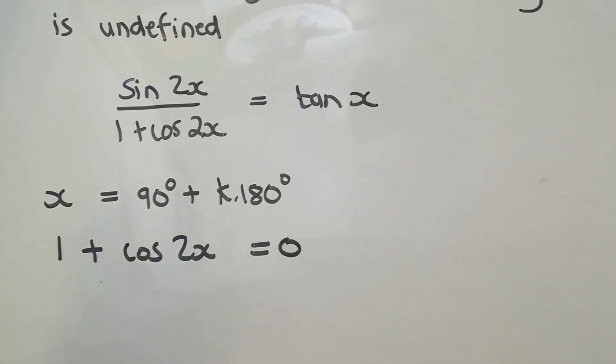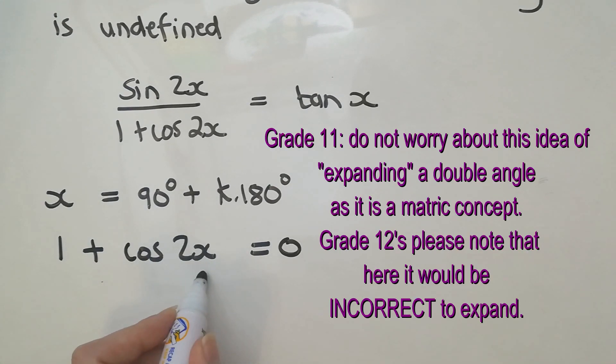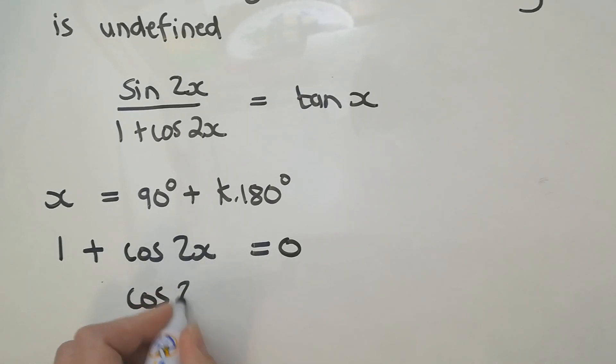So I'm going to solve this and of course, because there's a 2x, my brain is wondering whether or not I've got to expand. Let's just faff with it a little bit. Negative 1, if I move the negative 1 across, so cos of an angle is negative. No expansion necessary.